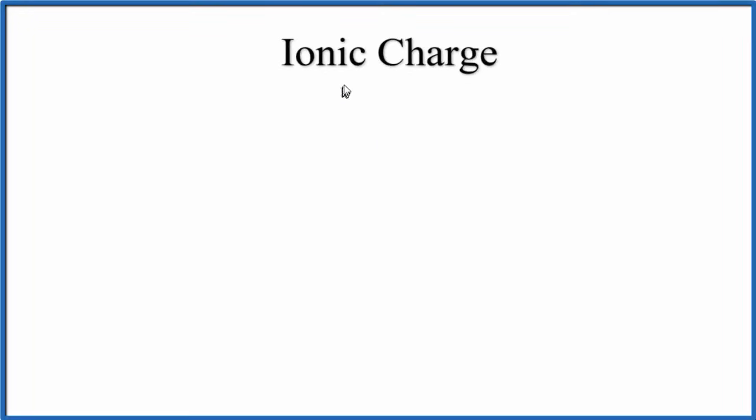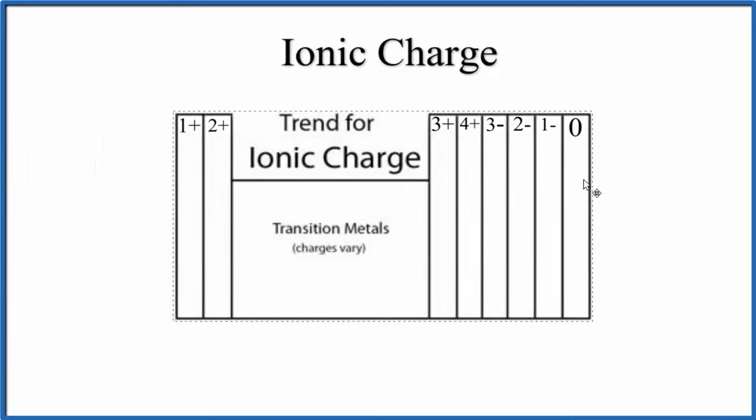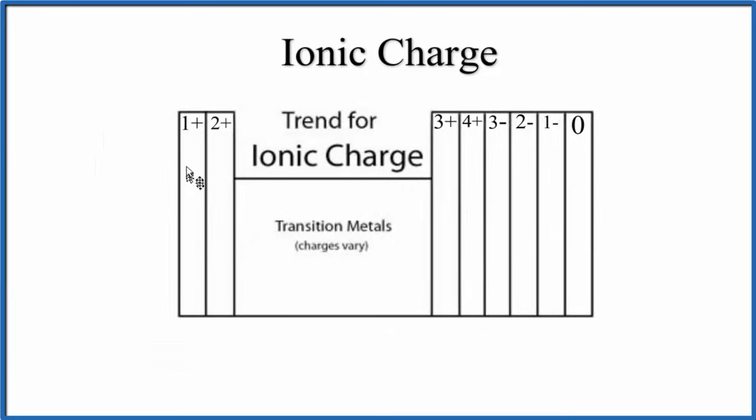In this video we'll talk about how to find the ionic charge for transition metals. When we find ionic charge, we often think of this pattern on the periodic table: group 1 forms 1+ ions, group 2 forms 2+ ions.